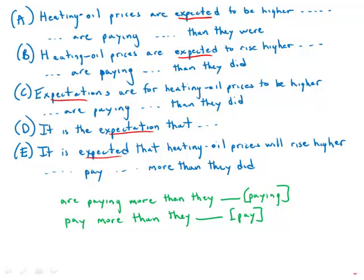So expectations are for heating oil prices to be higher. That's a wordy way to say it. So that's not preferable. It is the expectation that, oh my God, does anyone believe that something like that would be a correct answer on the GMAT? That's a disaster. So those two are out.